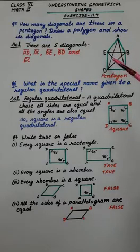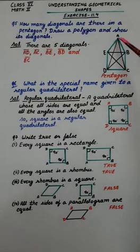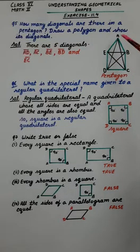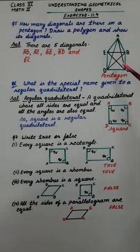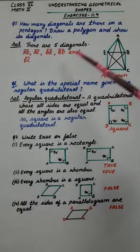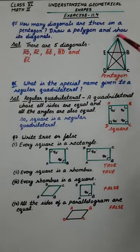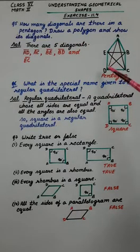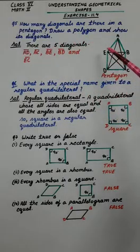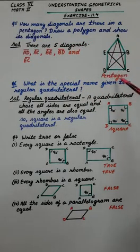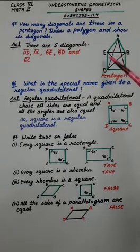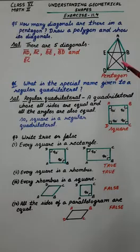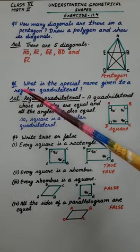Now, what is a diagonal? It's a line segment that joins opposite vertices. So there are 5 diagonals in this pentagon. Let's see their names: AD, AC, BE, BD, and EC. So this is a pentagon — a 5-sided closed figure — which means it's a polygon, and there are 5 diagonals in it.